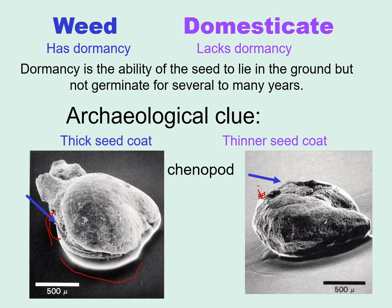We paleoethnobotanists think that the seeds shown here, which both came from the same pit at a site in southwestern Ohio, are actually the same species — simply the domesticate form on the right and the weed on the left. Why do these seeds look so different? In chenopodium, the embryo develops after the seed coat develops. On the left, the thick seed coat constricted the embryo and gave the seed a biconvex shape. Whereas on the right, the seed coat did not restrict the embryo, and we end up with a truncate margin seed.